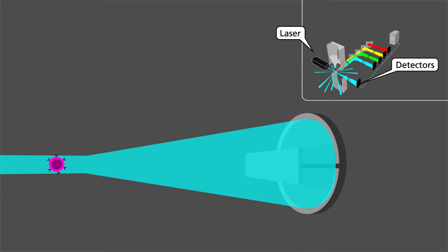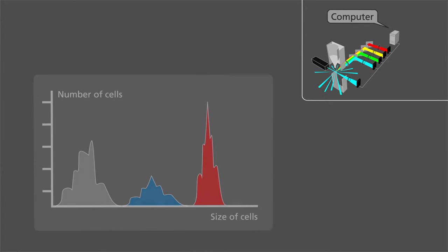The bigger the cell, the bigger the light scatter area and thus the electric signal created by the diode. Depending on the amount of electricity detected by the diode, the computer plots the signal more to the left or to the right on the x-axis, which indicates the size of the cells.